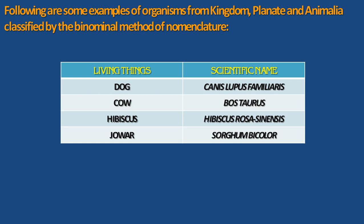Here is a list of living things with their scientific names based on binomial nomenclature. Dog: Canis lupus familiaris — the word 'canis' because dogs are specialized with canine teeth. Cow: Bos taurus. Hibiscus: Hibiscus rosa-sinensis. Jowar: Sorghum bicolor. These are examples of common names and their corresponding scientific names.